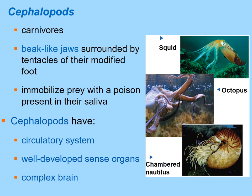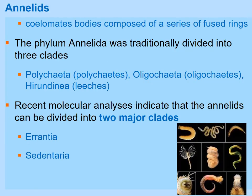Cephalopods are the most complex mollusks and are generally carnivores. They have beak-like jaws surrounded by tentacles for feeding. They have a modified foot, a well-developed circulatory system, highly developed sense organs, and a complex brain. Many immobilize prey with venom in their saliva.